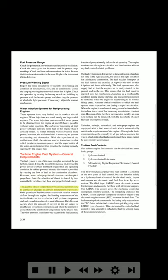The quantity of fuel supplied must be adjusted automatically to correct for changes in ambient temperature or pressure. If the quantity of fuel becomes excessive in relation to mass airflow, the limiting temperature of the turbine blades can be exceeded, or it will produce compressor stall and a condition referred to as rich blowout. Rich blowout occurs when the amount of oxygen in the air supply is insufficient to support combustion and when the mixture is cooled below the combustion temperature by the excess fuel. The other extreme, lean flame-out, occurs if the fuel quantity is reduced proportionally below the air quantity.